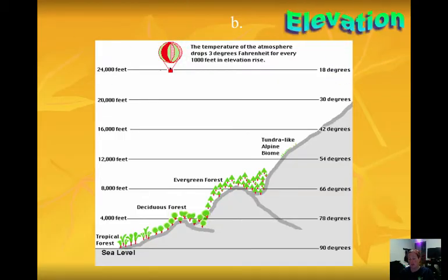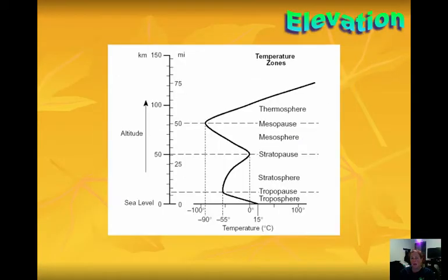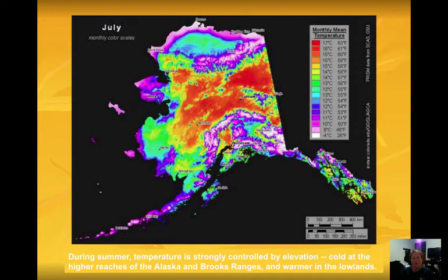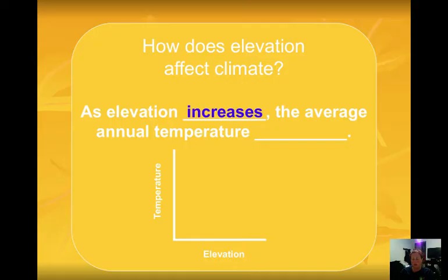The next factor is elevation or altitude. Think about it in terms of climbing a mountain — we typically find snow at the tops of high mountains. On page 14 of our reference table, it shows that at sea level the average temperature is about 15 degrees, and going up towards the top of the troposphere, temperature goes down to negative 55. So as elevation increases, average annual temperature decreases — again, an indirect relationship.